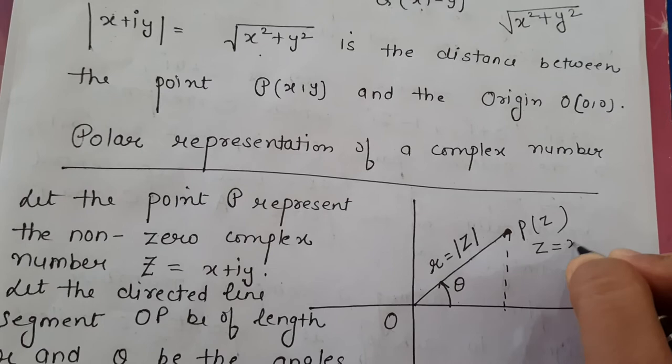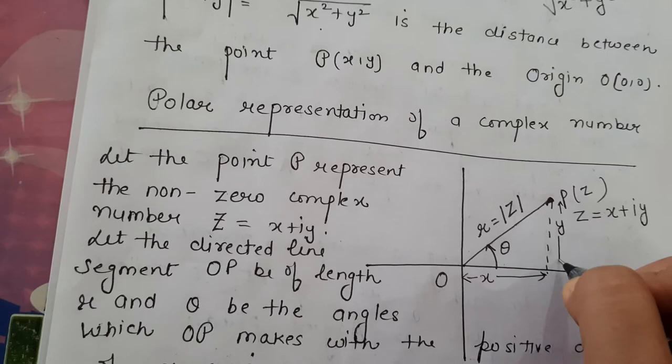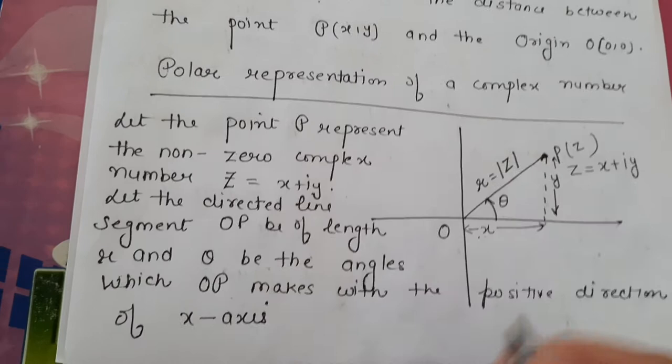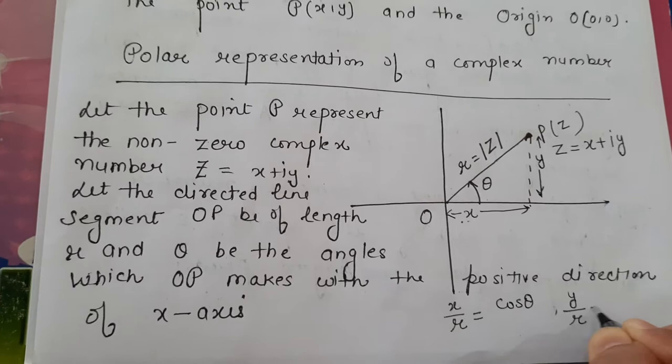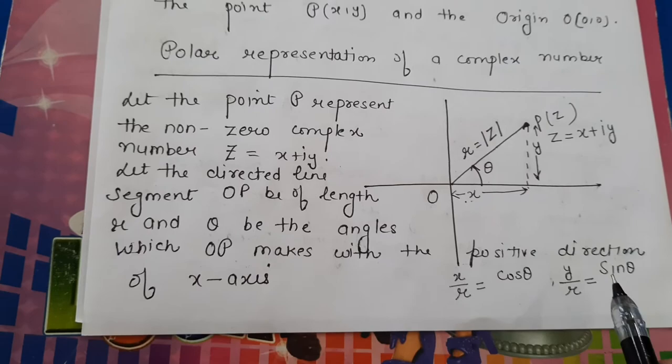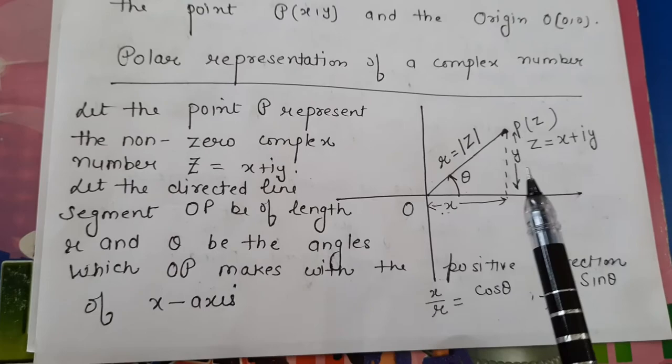Drawing a perpendicular from P: along the real axis we have x and on the y-axis we have y. By using the Pythagorean theorem, x/r = cos θ, so x = r cos θ; and y/r = sin θ, so y = r sin θ. To convert a complex number to polar form, replace the real part with r cos θ and the imaginary part y with r sin θ.